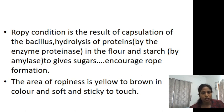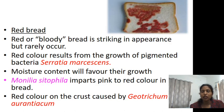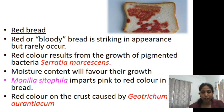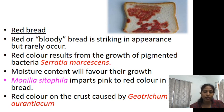Red bread — also called 'bloody bread' — is a rare but striking occurrence of spoilage. The red color results from the growth of pigmented bacteria like Serratia marcescens, and moisture content favors their growth. Monilia (Neurospora sitophila) imparts a pink to red color in bread.